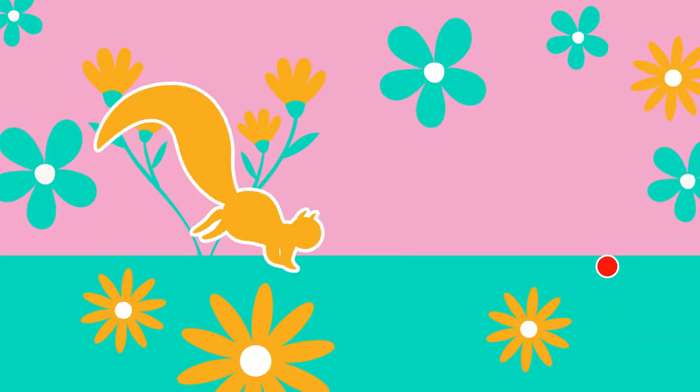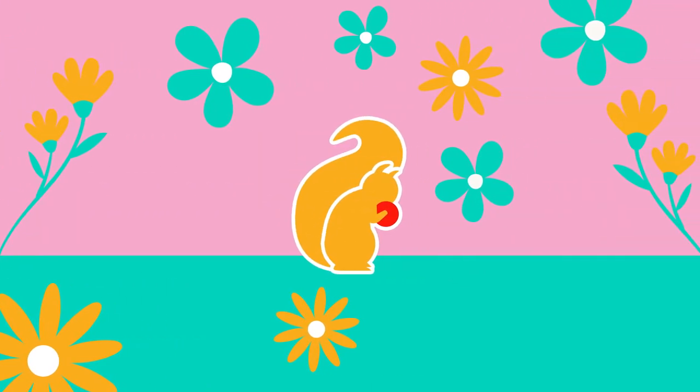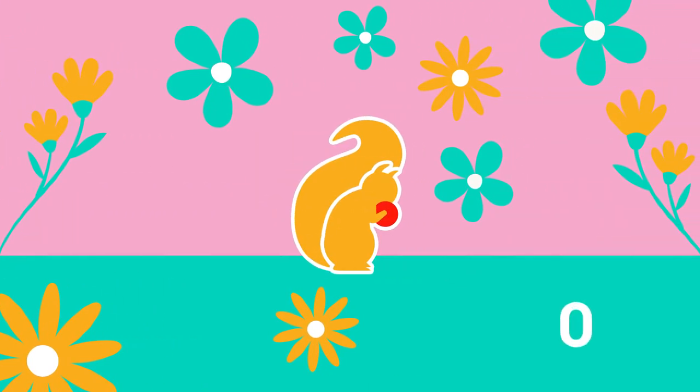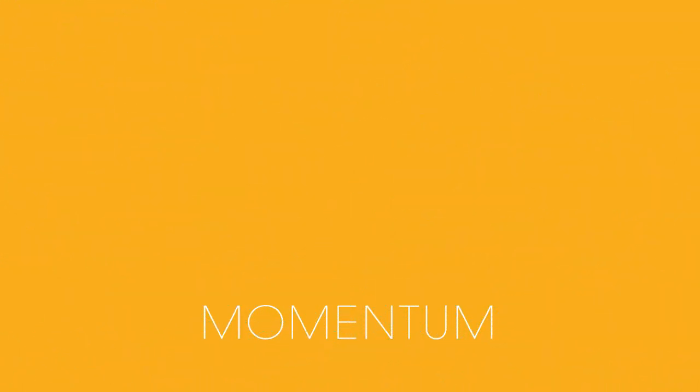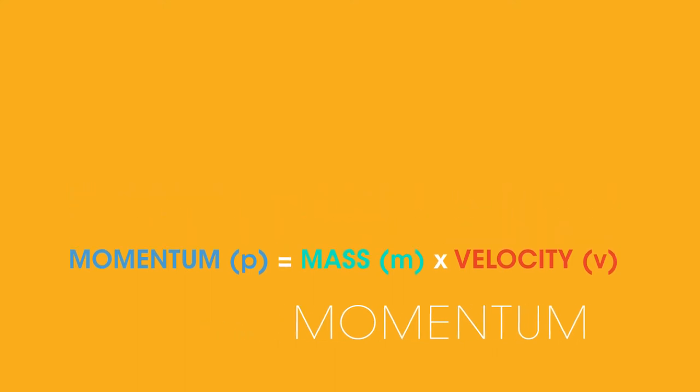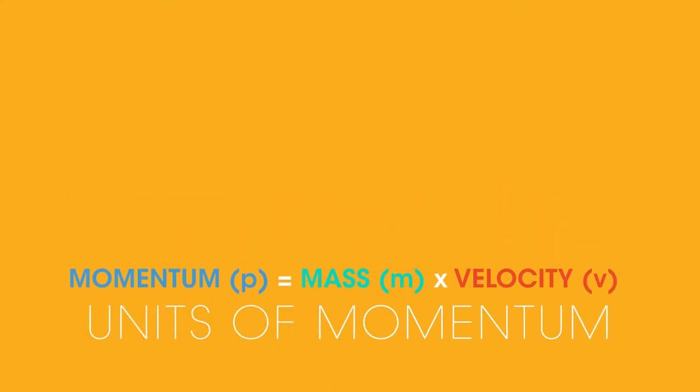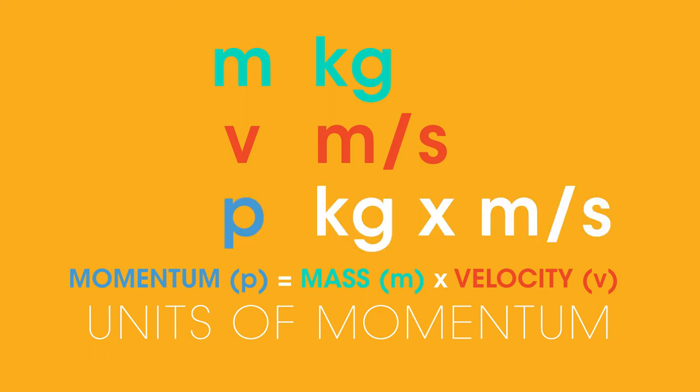All moving objects have momentum. A stationary object has a momentum of zero. We calculate momentum using this equation: momentum P equals mass m times velocity V. What are the units of momentum? Mass is measured in kilograms and velocity in meters per second, so momentum equals kilogram meters per second.